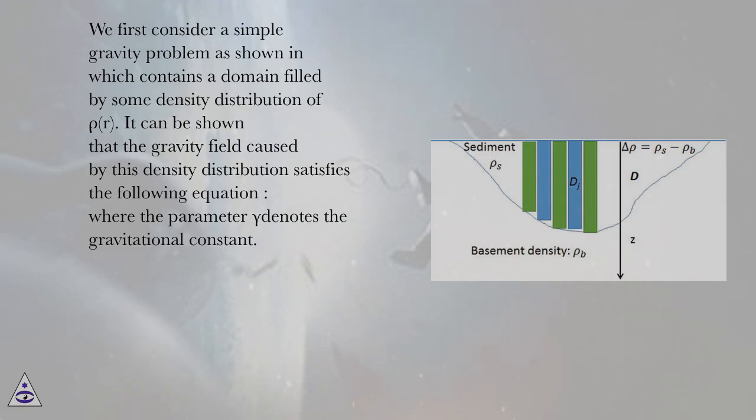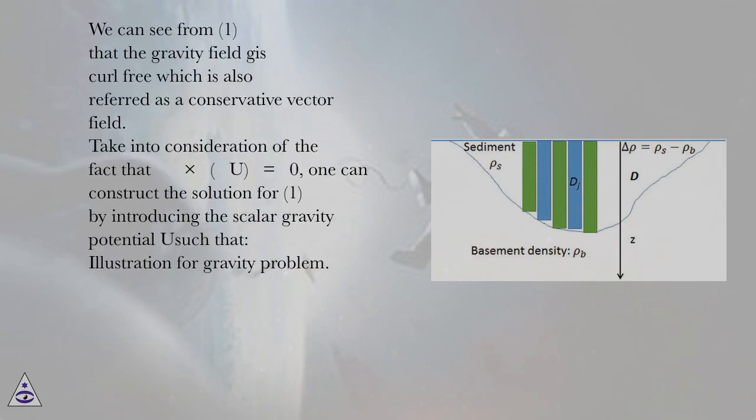Where the parameter γ denotes the gravitational constant. We can see from (1) that the gravity field g is curl-free which is also referred as a conservative vector field.